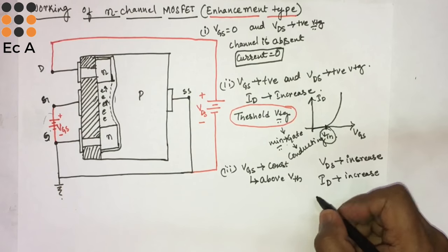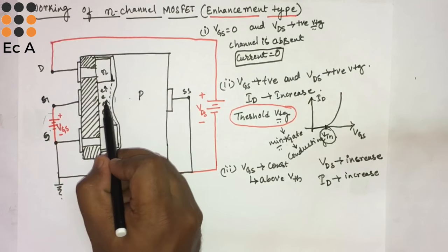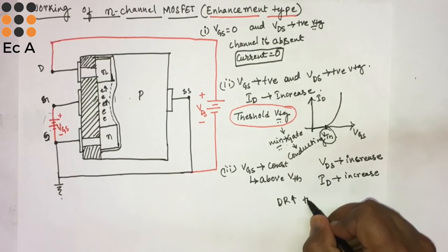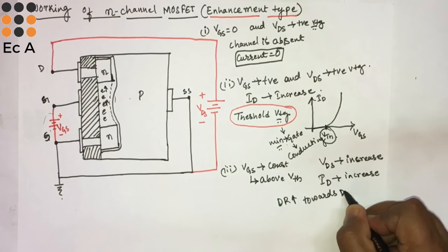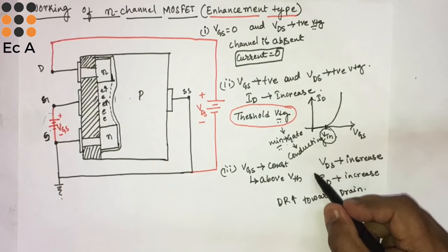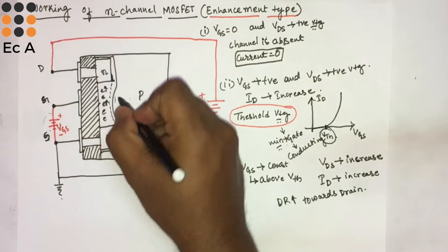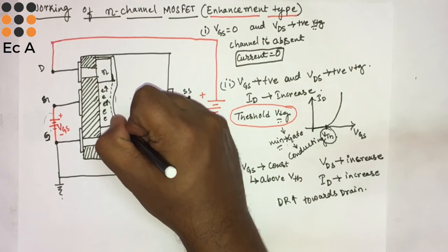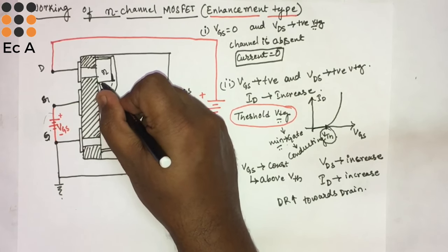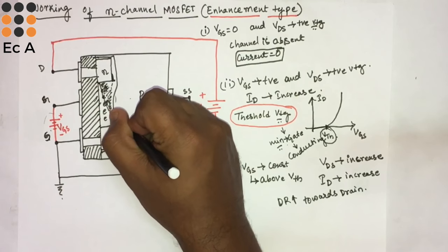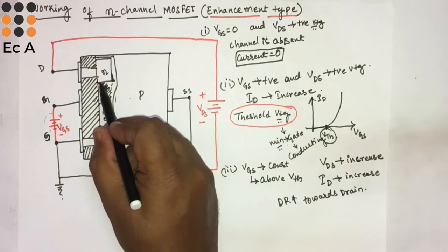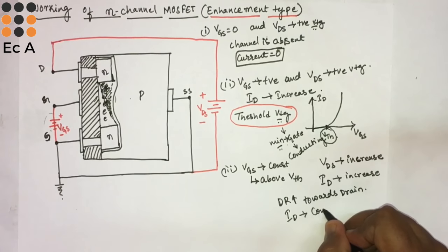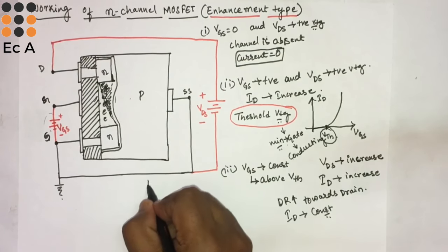The depletion region between the N-channel and P-region will also increase towards the drain as we increase VDS. This depletion width increases, causing the channel to become narrow, and hence the current will become constant — the device enters saturation.